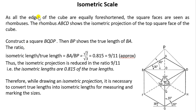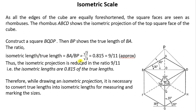Finally, the isometric scale. All the edges of the cube are equally foreshortened, so the square faces appear as rhombuses. The isometric scale is found by dividing isometric length by true length. The ratio works out to 9 to 11, which should be written in the title box.